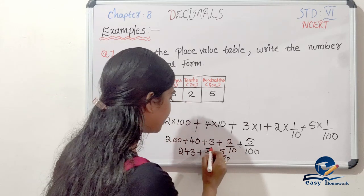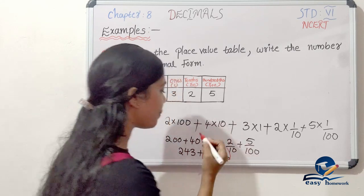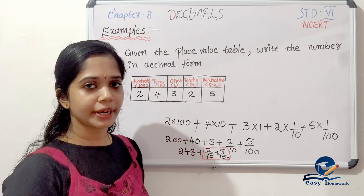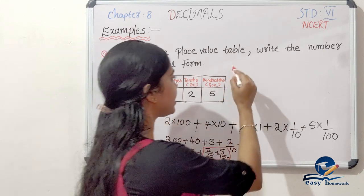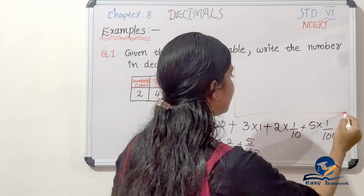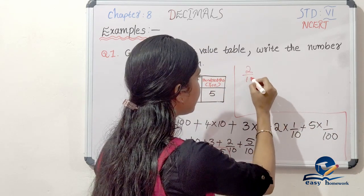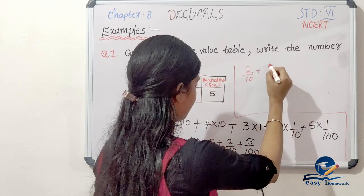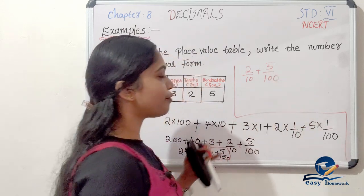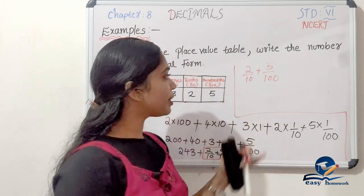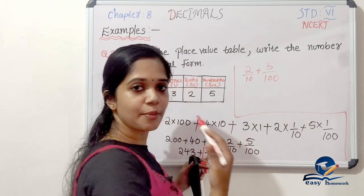For the decimal part, we have 2×(1/10) plus 5×(1/100). That is the decimal part. We have two fractions and we need to add them, so we need to find a common denominator.